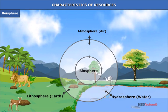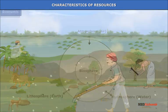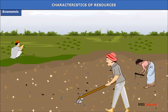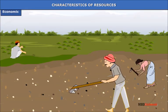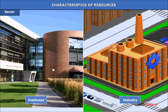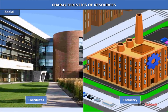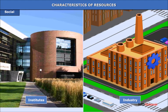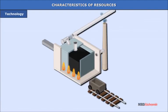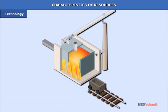Human beings are at the center of one component called the biosphere. Economically, human beings make resources available through their economic activities. Socially, human institutions, industry and society accelerate their development. Technology is the main human agent of transformation of materials available in nature into resources.